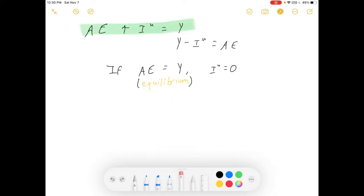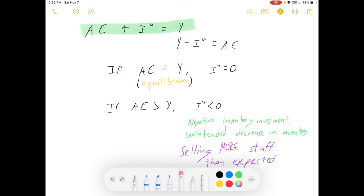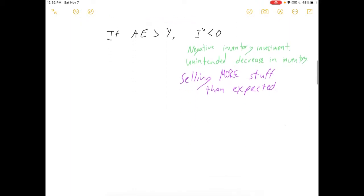We'll come back to that in my next video. But we're obviously not going to be in equilibrium all the time. So let's explore a little bit what happens if AE does not equal Y. So if aggregate expenditures are greater than Y, well then by our equation that means that unplanned inventory investment has to be negative. That means that there is an unintended decrease in inventory, which is we are selling more stuff than we expected. And so our products are coming off the shelves faster than we thought. This is going to be important for us because later we're going to use this to help predict what part of the business cycle we're in.